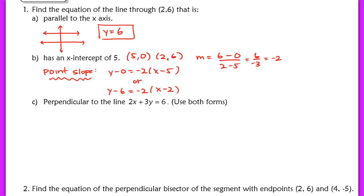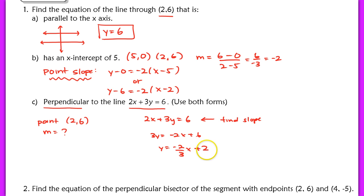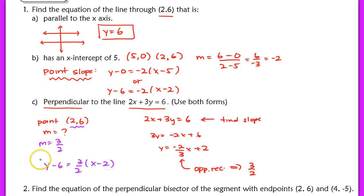For the last part of example 1, find the equation of the line through the point (2, 6) that is perpendicular to the line 2x plus 3y equals 6. We need to find the slope of our new line. Solving 2x plus 3y equals 6 for y gives us negative 2/3 x plus 2. Taking the opposite reciprocal of negative 2/3 gives us 3/2, which is our new slope. Using point-slope form: y minus 6 equals 3/2 times x minus 2.